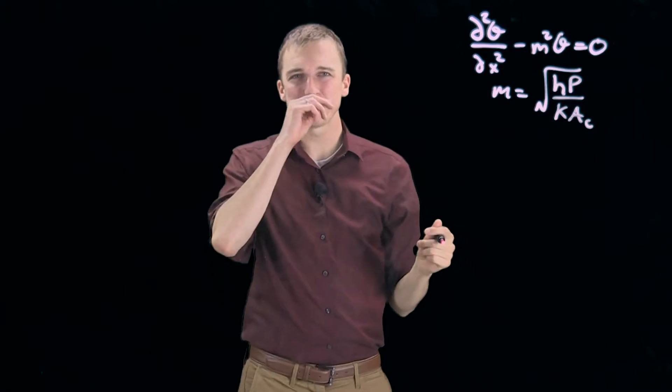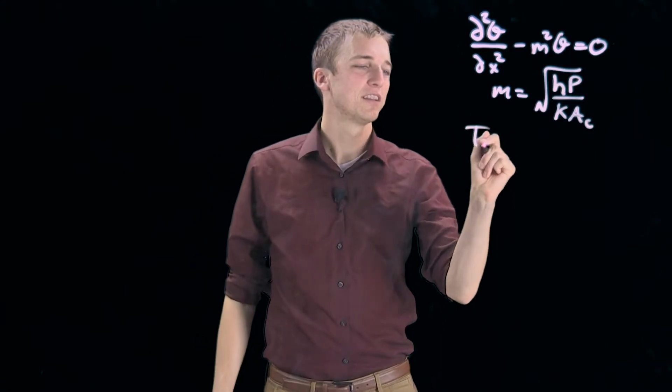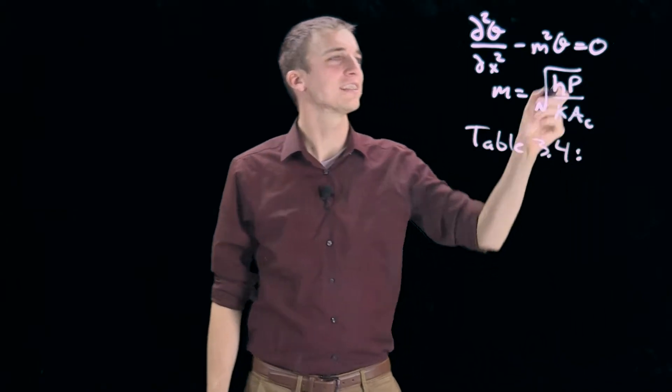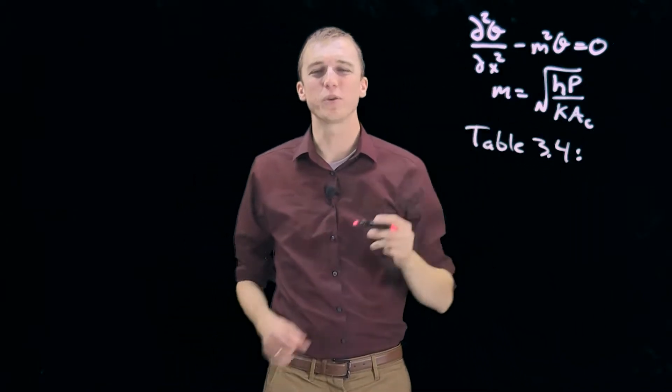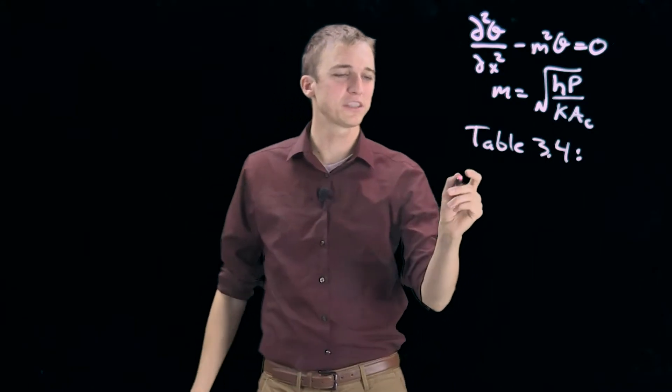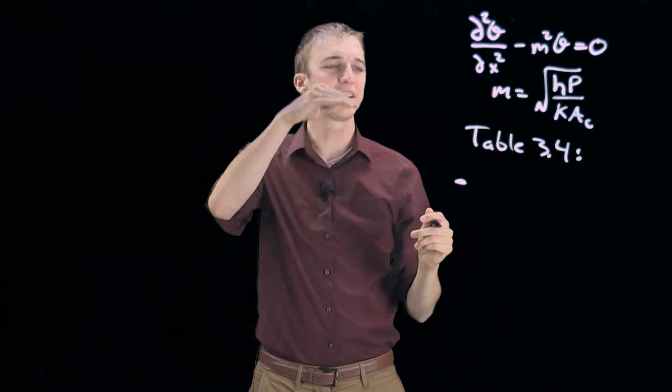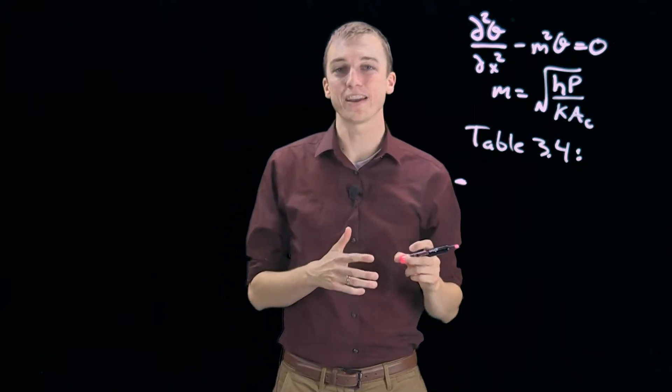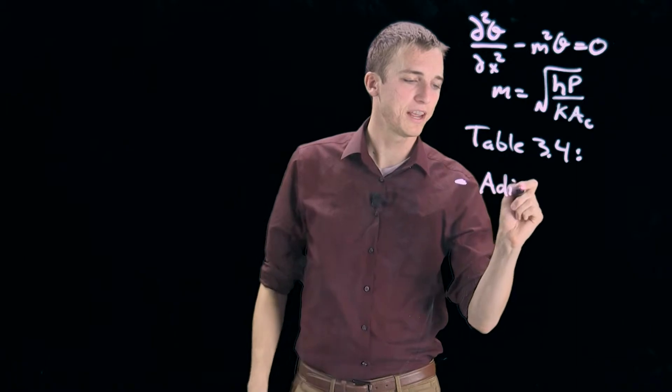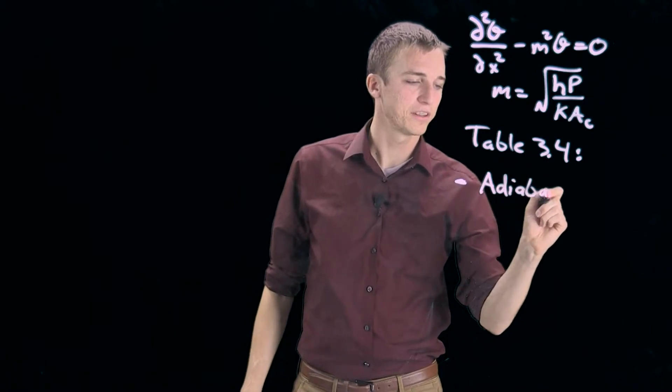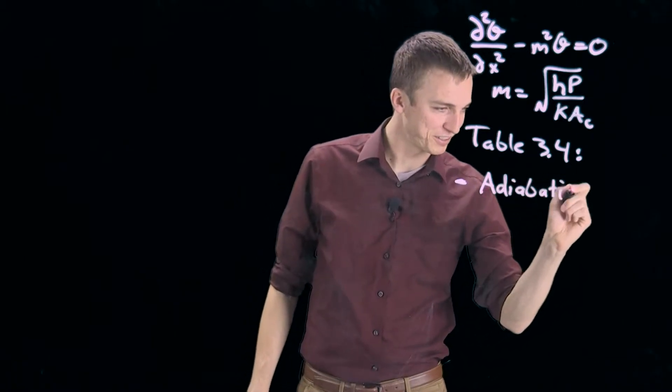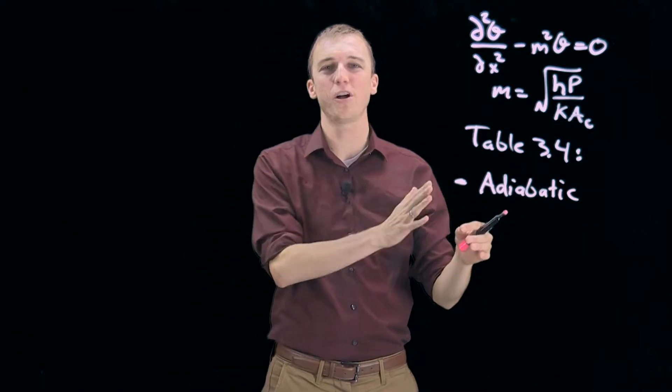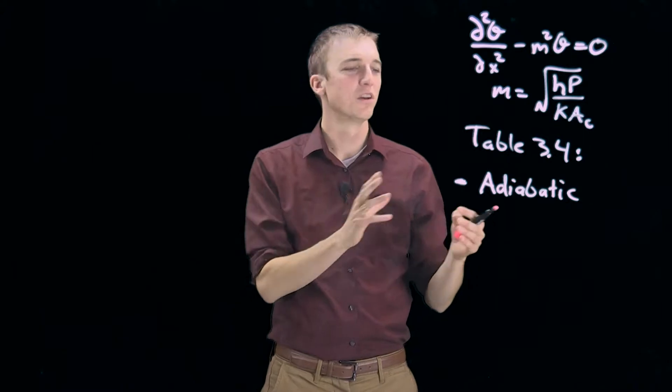We're going to solve this equation: d squared theta dx squared minus m squared theta equals zero, which is a governing equation telling us the temperature profile inside of a fin, where m is equal to the square root of hp over kac. We're going to use tabulated solutions, specifically in table 3.4. We also need to know the tip condition. In this case, they specified it's adiabatic or insulated. So we go to the table, on the left column we look up adiabatic.